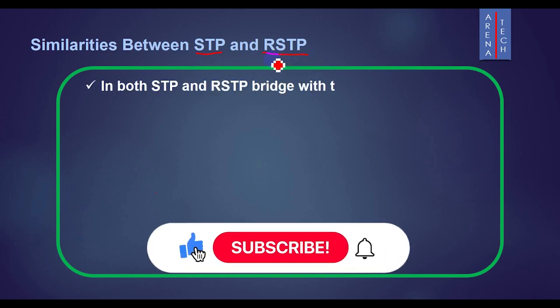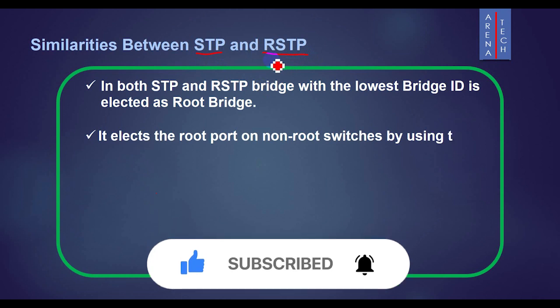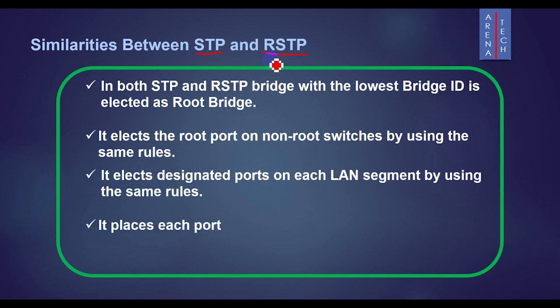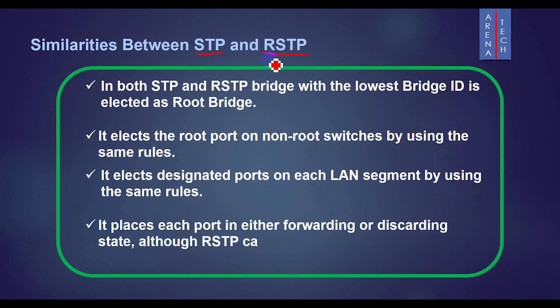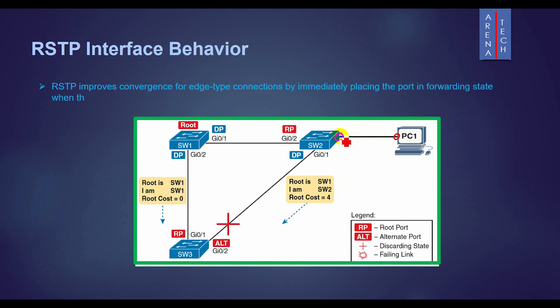Some similarities between STP and RSTP are: in both STP and RSTP, the bridge with the lowest bridge ID is elected as root bridge. It elects the root port on non-root switches using the same rules. It also elects designated ports on each LAN segment using the same rules, and it places each port in either forwarding or discarding state, although RSTP calls the blocking state the discarding state. RSTP improves convergence for edge-type connections by immediately placing the port in forwarding state when the link is physically active.